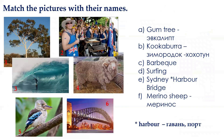These icons are not the only ones. Let's have a look at some other Australian icons: Gumtree, Kookaburra, BBQ, Surfing, Sydney Harbour Bridge, and Merino sheep. You can pause the video, match the pictures with their names, and then we will check. The word with an asterisk is 'harbour', which means a port.